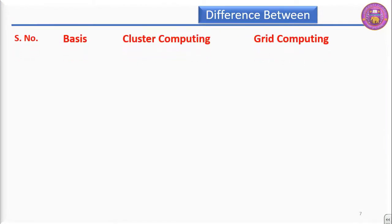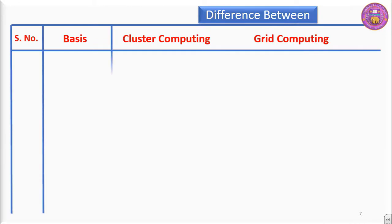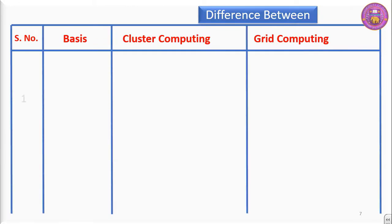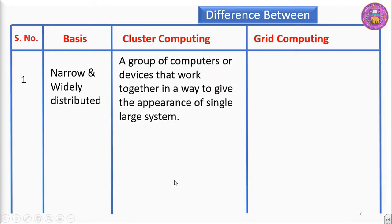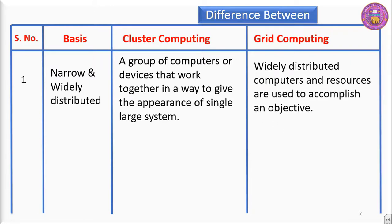Now the difference between cluster computing and grid computing. In terms of distribution: in case of cluster computing, a group of computers work together to give the appearance of a single large system. In case of grid computing, widely distributed computers and resources are used to complete an objective.